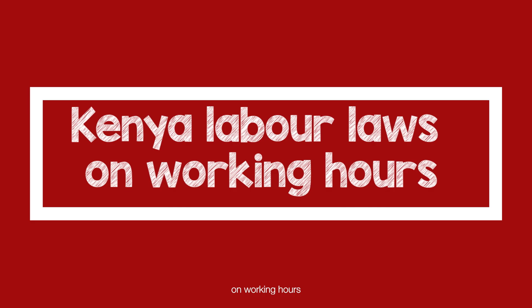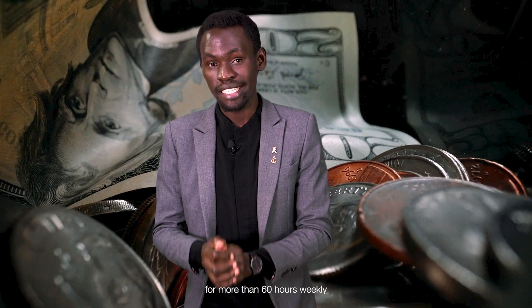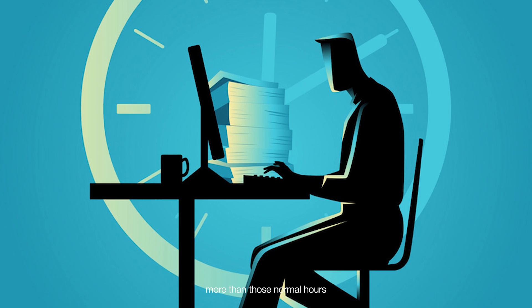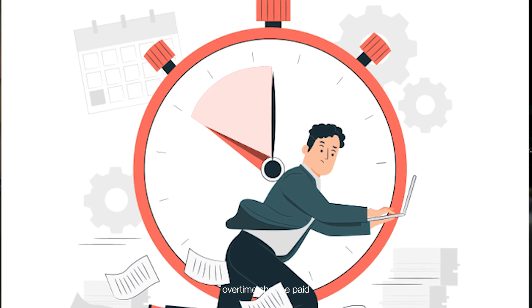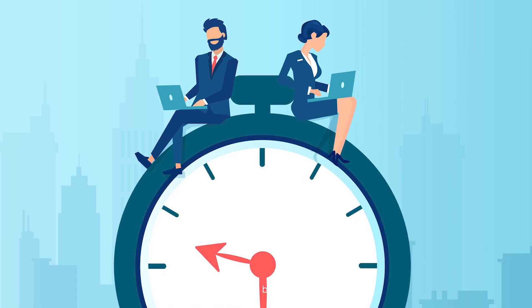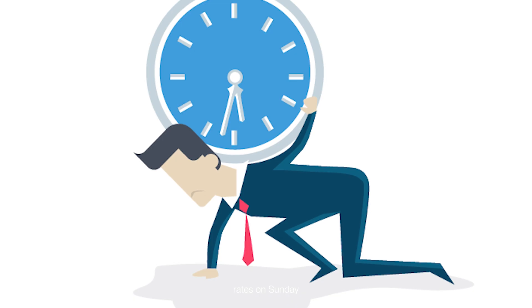How about Kenyan labor laws on working hours? Under the Regulation of Wages Order, subsidiary to the Regulations of Wages and Conditions of Employment Act, the total working hours are 52 hours per week. Normal working hours every week is 45 in Kenya. A person employed at night may not work for more than 60 hours weekly. Employees below 16 years of age cannot work for more than 36 hours a week. If an employee works more than those normal hours weekly, the extra hours are treated as overtime and they should be paid for that. Overtime shall be paid at the rate of one-and-a-half times the hourly rate on weekends, and twice the basic hourly rate on Sundays and public holidays.